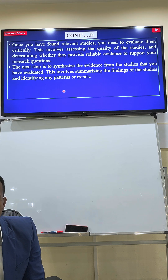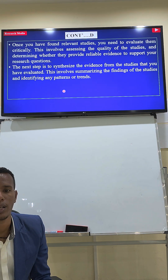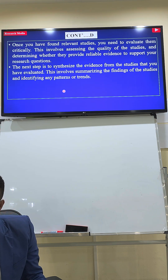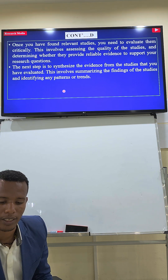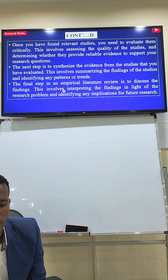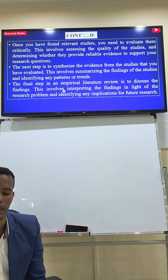The next step is to synthesize the evidence from the studies that you have evaluated. This involves summarizing the findings and identifying any patterns or trends. The final step in an empirical literature review is to discuss the findings, interpreting them in light of the research problem and identifying any implications for future research.